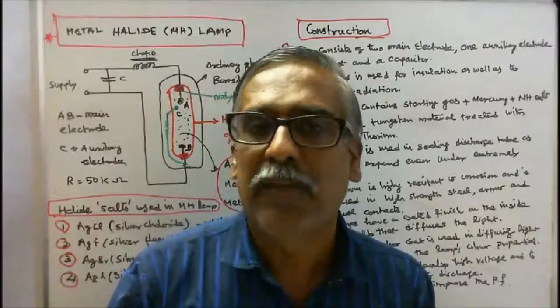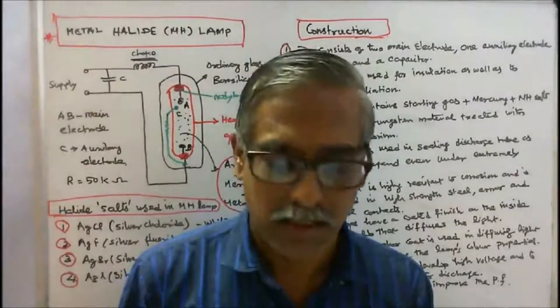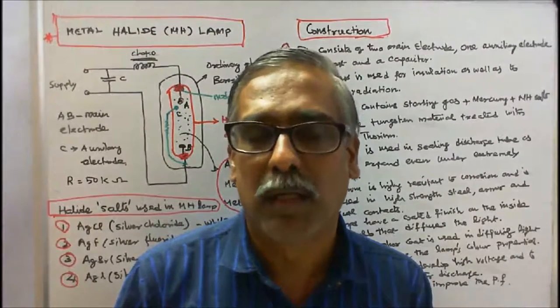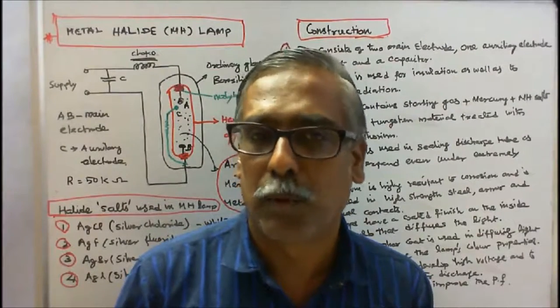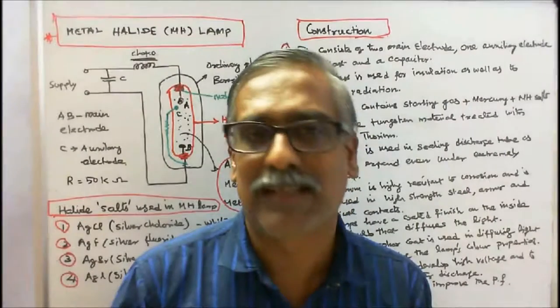There are five halogens: fluorine, chlorine, bromine, iodine, and astatine.